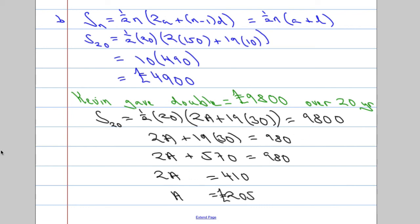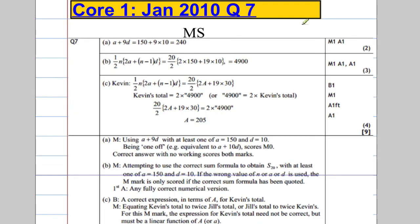Well, let's have a look and see how we did with regards to the mark scheme. 240, we had that. 4,900. Beautiful. And we can see here A equals 205. Now, you can have a look at the mark scheme in full there if you wish.